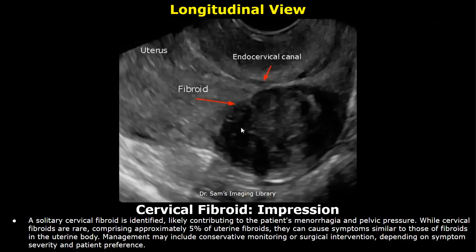Impression: a solitary cervical fibroid is identified, likely contributing to the patient's menorrhagia and pelvic pressure. While cervical fibroids are rare — comprising approximately 5% of uterine fibroids — they can cause symptoms similar to fibroids in the uterine body. Management may include conservative monitoring or surgical intervention depending on symptom severity and patient preference.